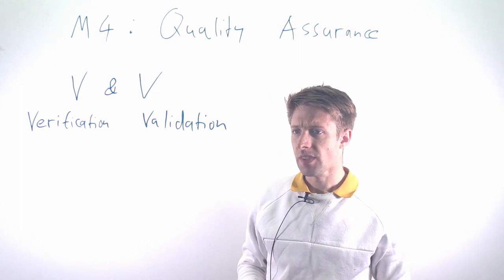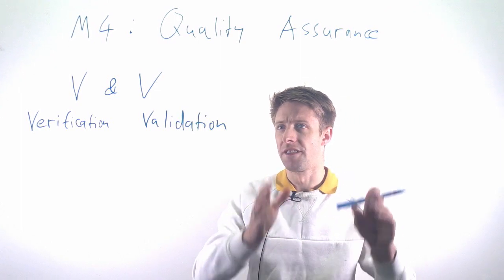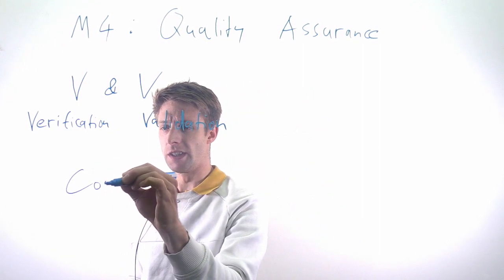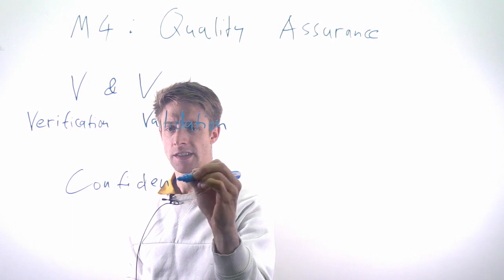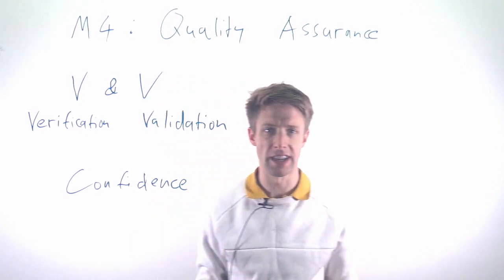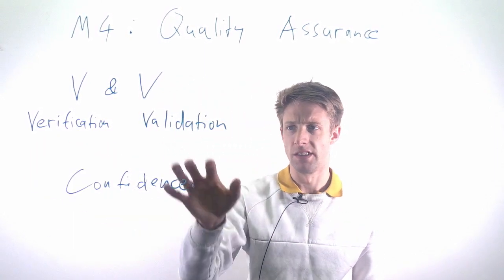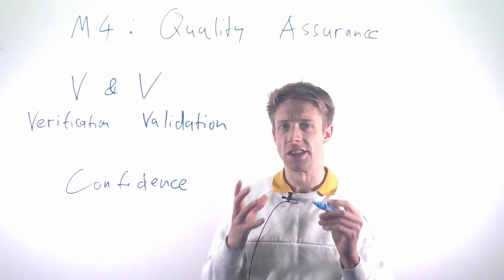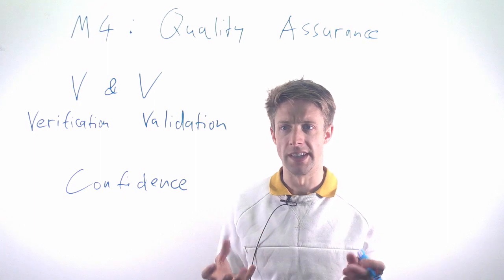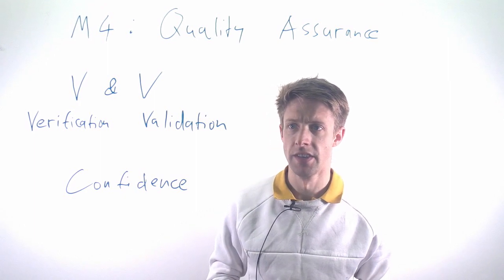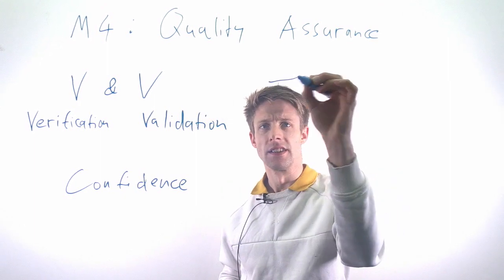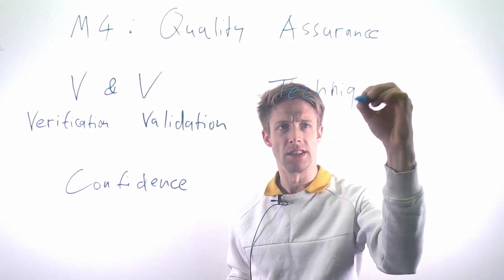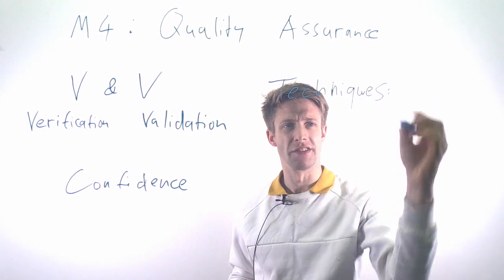Now the whole purpose of quality assurance is to establish some kind of confidence that our system is working in the right way, that we're building the right system. So you try to find evidence, find arguments, check whether you are doing well enough essentially. And on a large abstract level, there are essentially two kinds of techniques.